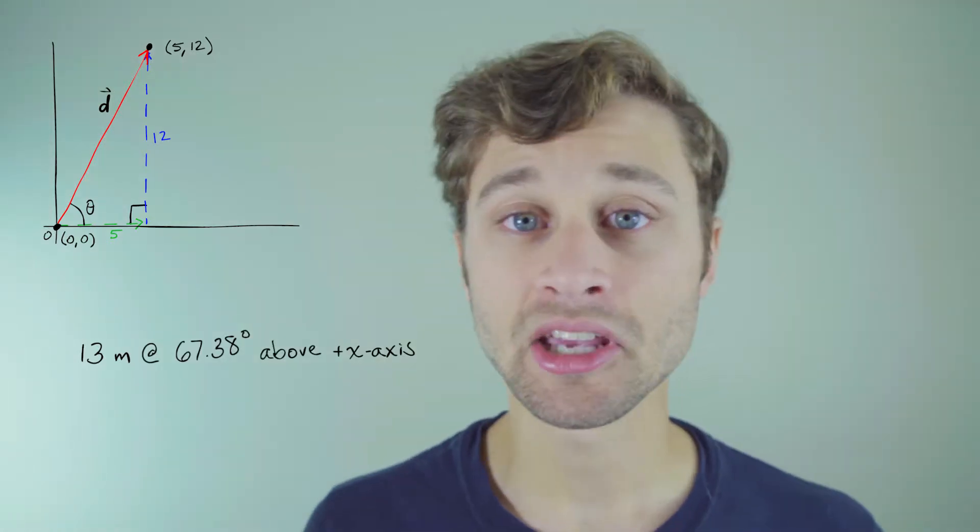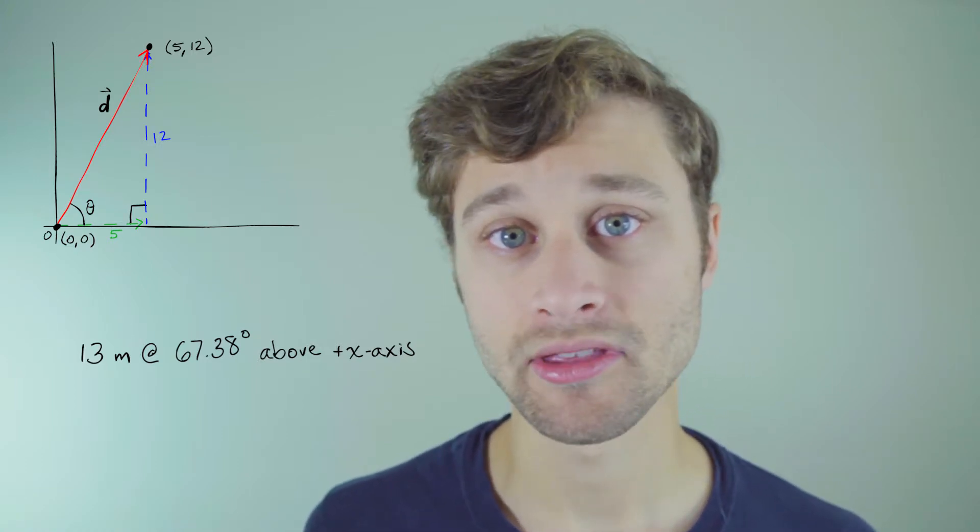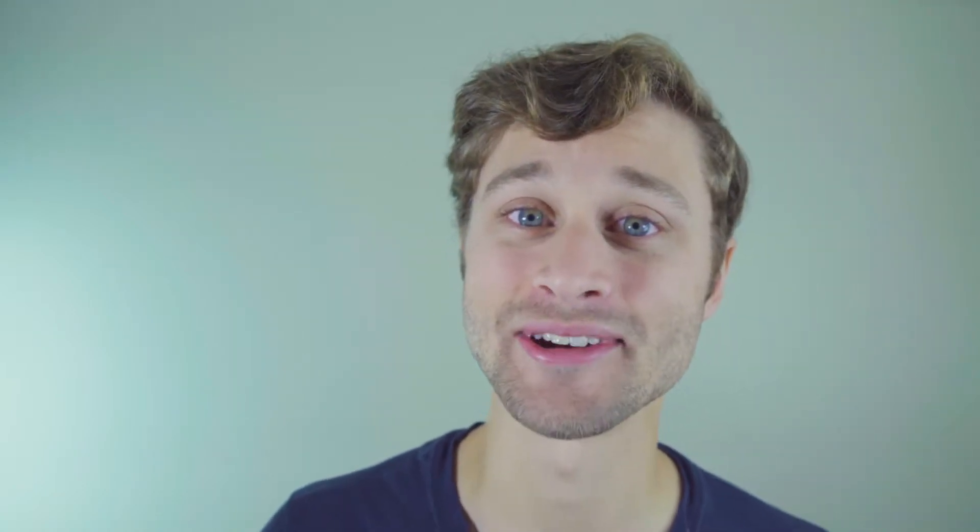This is a complete and perfectly adequate way of describing the vector, but there are other ways of doing so — and some more elegant ways if you're interested in elegant math. One way is to describe it using unit vectors, which is what we're going to get into now.